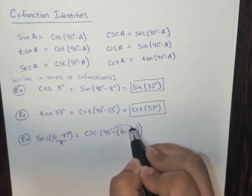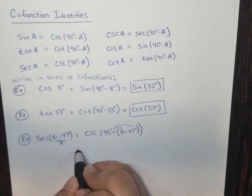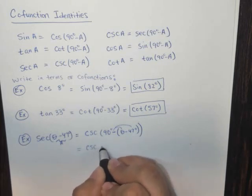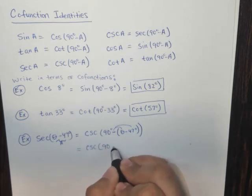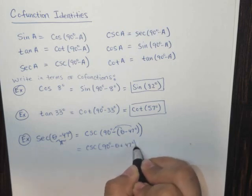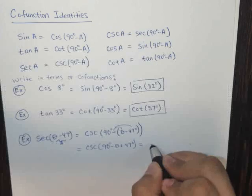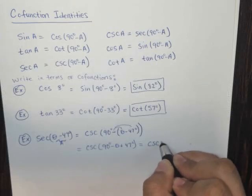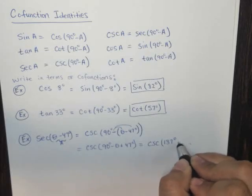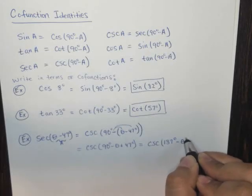Now we can distribute this negative sign and we're going to get, what do we get here? We get the cosecant of 90 degrees minus theta plus 47 degrees. And we're going to combine our like terms.